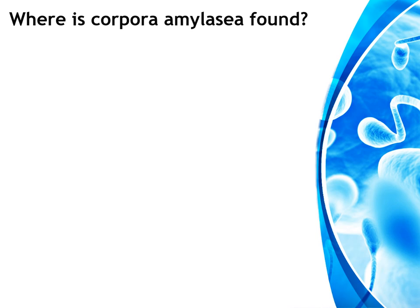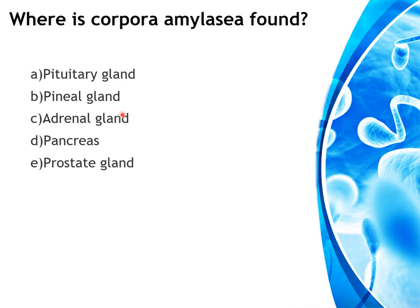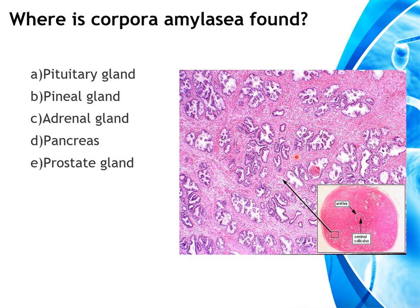Corpora amylacea — also called prostatic concretions — are eosinophilic laminated bodies present within the lumen of the gland and increase with age. The answer is the prostate gland.